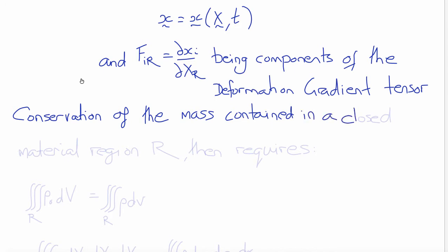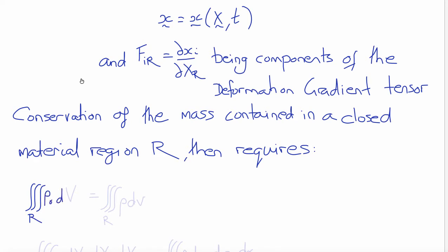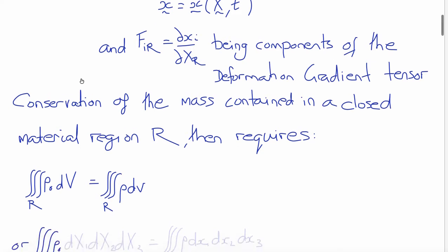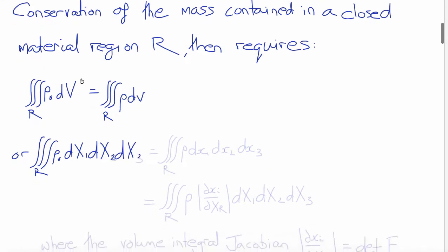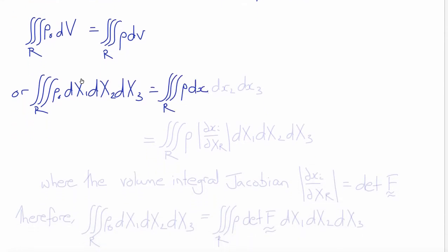Conservation of the mass contained within a closed material region R can then be expressed as follows. The triple integral over the region R of ρ₀, the undeformed density, with respect to volume in the undeformed state, is equal to the triple integral over R of the deformed density ρ with respect to the deformed volume dV. Writing this in components: the triple integral of ρ₀ with respect to dX₁ dX₂ dX₃ equals the triple integral of ρ over R with respect to dx₁ dx₂ dx₃.